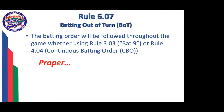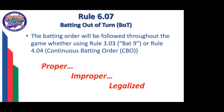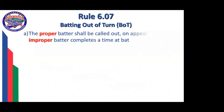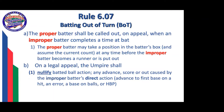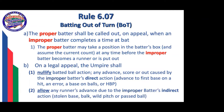Batting out of turn. Three key words: the proper batter, the improper batter, and a batter who has become legalized because there was no appeal made. This is the same rule whether you're using the bat-nine rule 303 or you're using the continuous batting order under rule 404. In essence, if you have an improper batter who completes a time at bat and it's properly appealed, the proper batter is called out. If you're in the middle of the at-bat with that improper batter up, the proper batter may take a position in the batter's box and assume the current count at any time before the improper batter becomes a runner or is put out. Note, for purposes of mandatory play, because the proper batter stepped in with the partial count, this will not count as the time at bat for mandatory play.